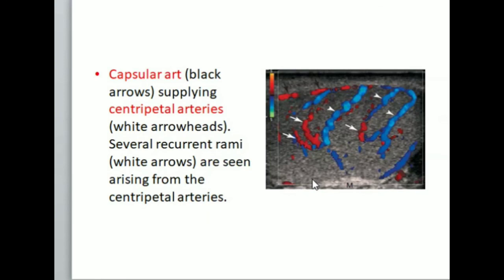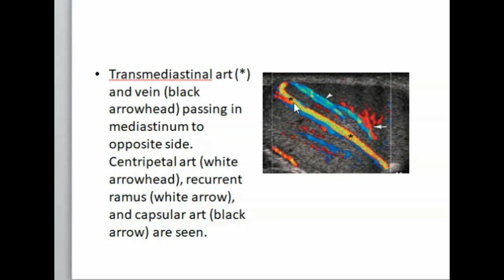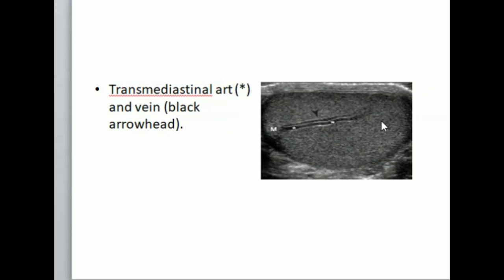This is the capsular arteries. These are the centripetal arteries taking branches from the capsular arteries. And these are some recurrent rami from the centripetal arteries. These are the arteries lying in the mediastinum, and other arteries can also be visualized. These black and white vessels visualized in the mediastinum are called transmediastinum arteries, which are lying within the mediastinum.